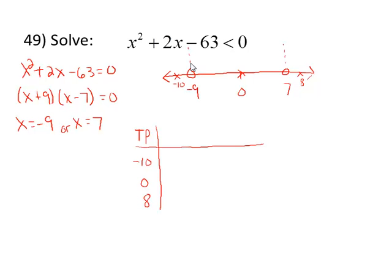I'm going to set up a sign chart to do this, although you could just substitute each of these values into the original inequality to see if they make them true or false. Instead, I'm going to substitute each of my two factors, determine the sign, and determine the product. -10 + 9 is -1, so that's negative. -10 - 7, that's -17, also negative. And a negative times a negative is a positive.